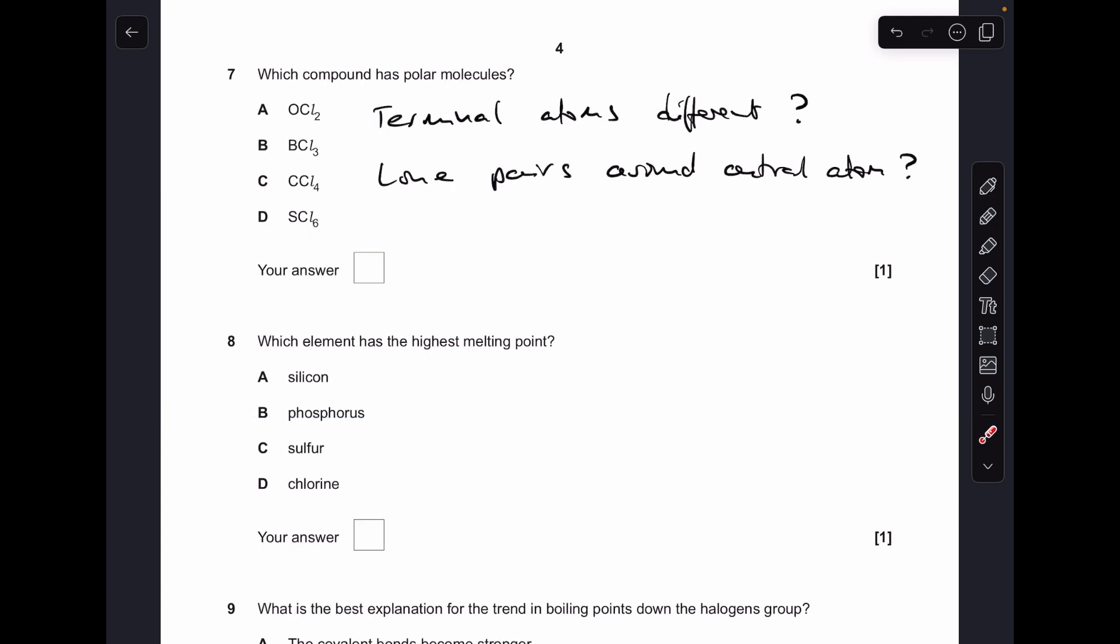Number 7, so two quick questions to ask to determine whether it's polar or not. Have we got different terminal atoms? No, they're all chlorines. Have we got any lone pairs around the central atom? If the answer is yes, it's going to be polar. So A is the answer, because obviously oxygen's in group 6, it's only making two bonds, so there are four electrons left over, two lone pairs, whereas all the others, so boron group 3 making three bonds, carbon group 4 making four bonds, sulfur group 6 making six bonds, no lone pairs in any of those.